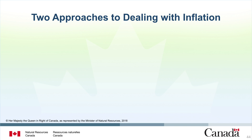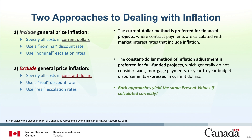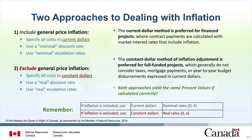Two approaches exist for handling inflation. The calculation can either include general price inflation or exclude it. In the first approach, include general price inflation by specifying all costs in current dollars and use a nominal discount rate and a nominal escalation rate, both of which take inflation into account. Alternatively, you can exclude general price inflation and specify all dollars in constant dollars, using the real discount rate and real escalation rates. Cash flows can be stated either in current dollars or in constant dollars. The constant dollar method is preferred for fully funded projects, which generally do not consider taxes, mortgage payments, or year-to-year budget disbursements expressed in current dollars. The current dollar method is preferred for finance projects where contract payments are calculated with market interest rates that include inflation. Mathematically, both approaches lead to the same present value.